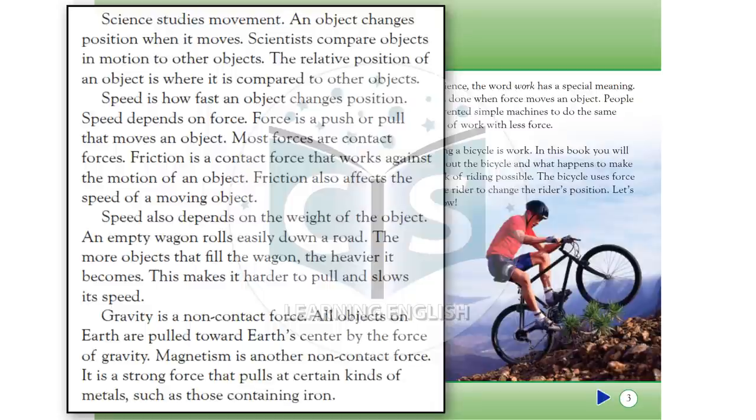Speed also depends on the weight of the object. An empty wagon rolls easily down a hill. The more objects that fill the wagon, the heavier it becomes. This makes it harder to pull and slows its speed.